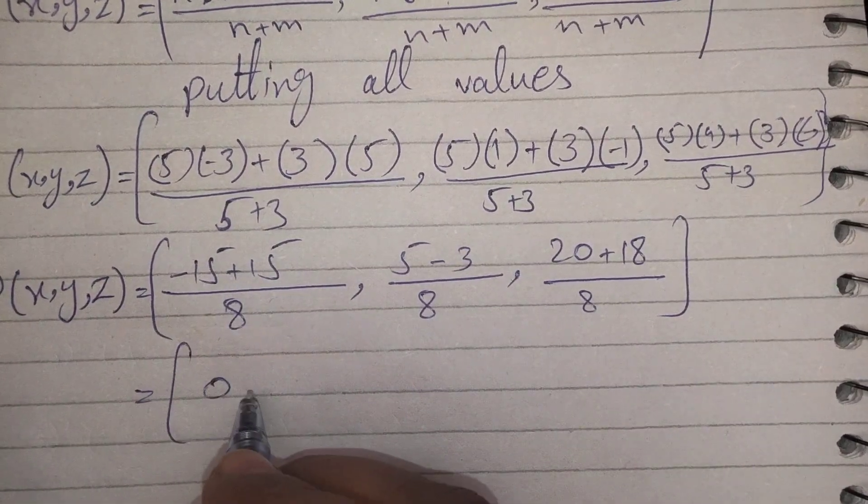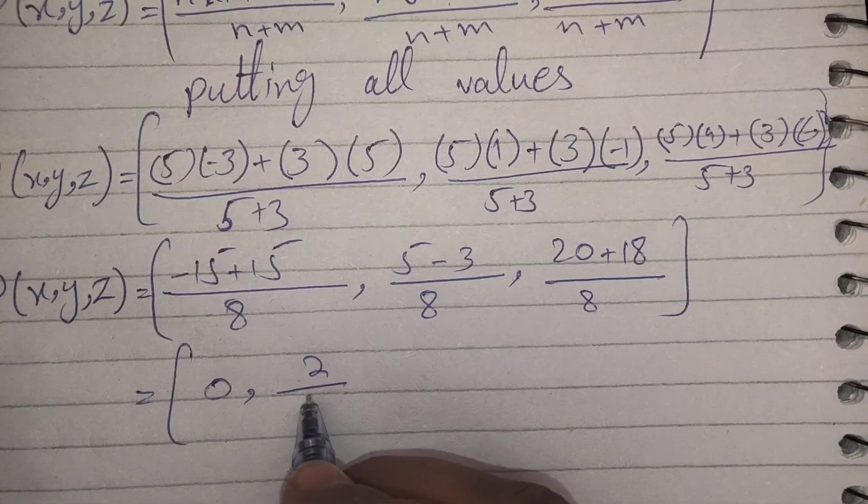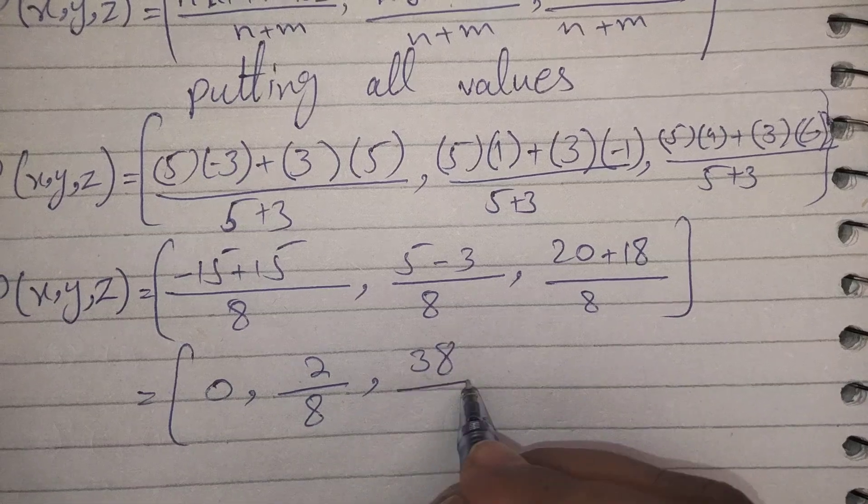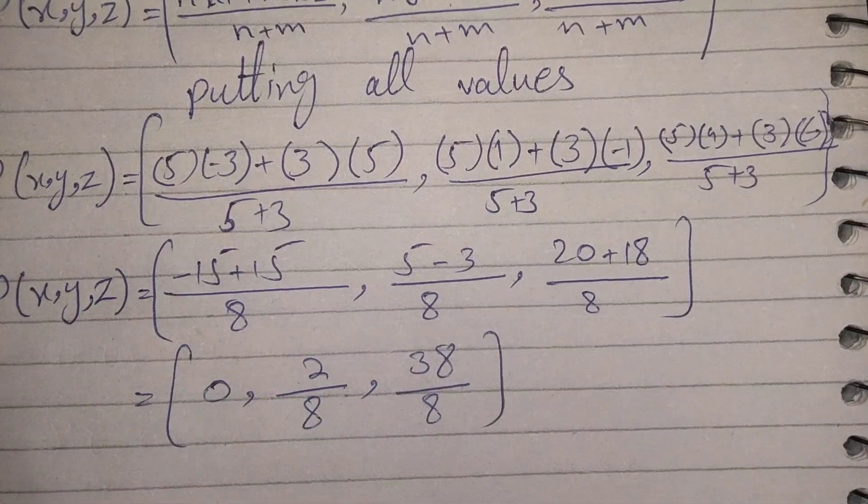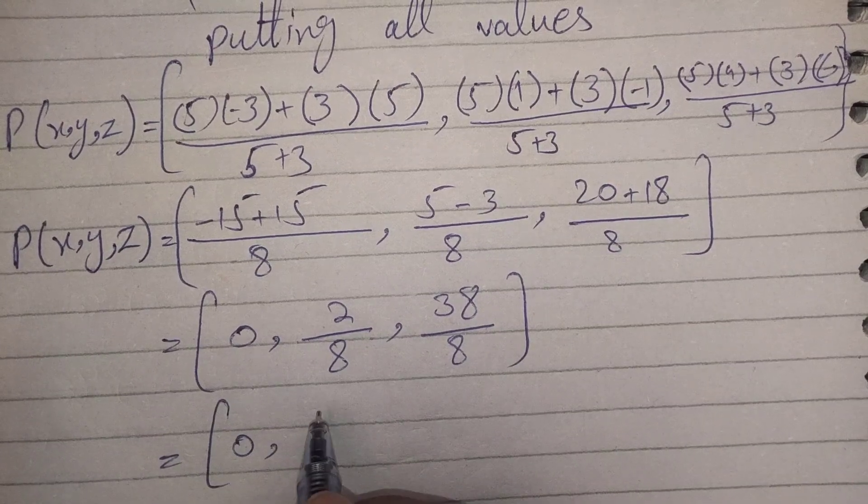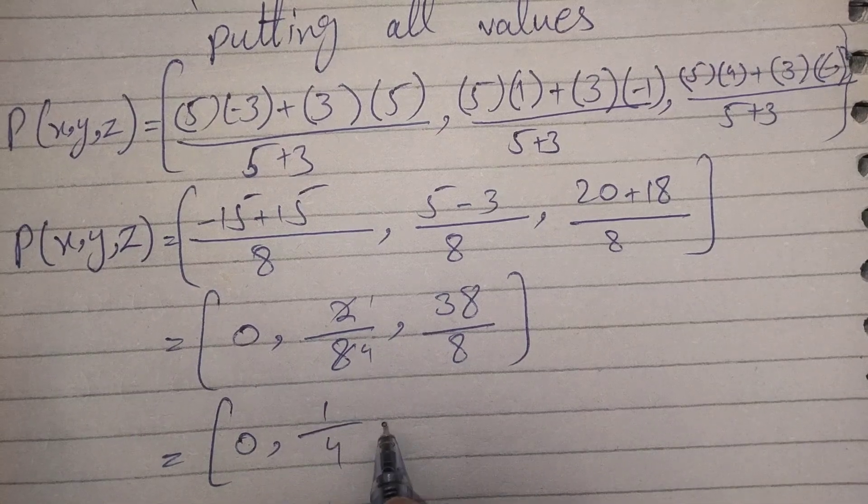So this will be 0, 2 over 8, and 38 over 8. Simplifying: 0, 1/4, and 38/8 which equals 19/4.